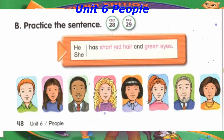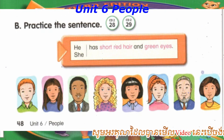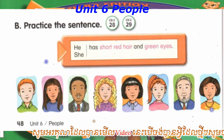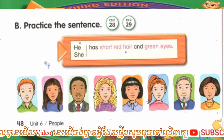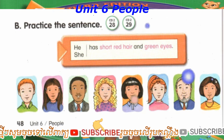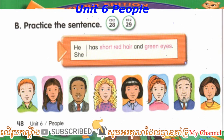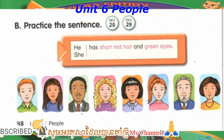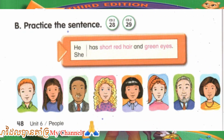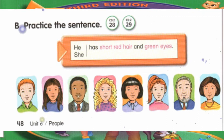Track 29, B. Practice the sentence. Number 1: He has short red hair and green eyes. Number 2: She has long brown hair and brown eyes. Number 3: He has a black mustache and short curly black hair. Number 4: She has long blonde curly hair and blue eyes. Number 5: She has short black hair and black eyes. Number 6: She has long red hair and a ponytail.